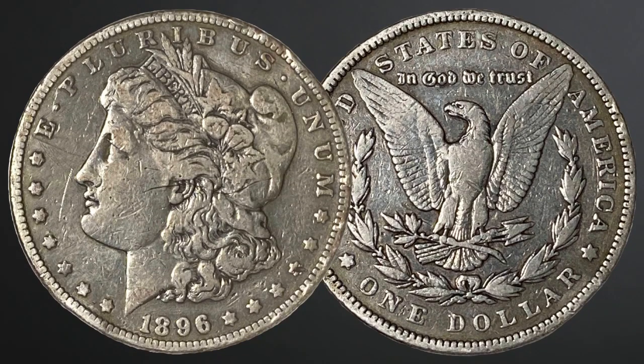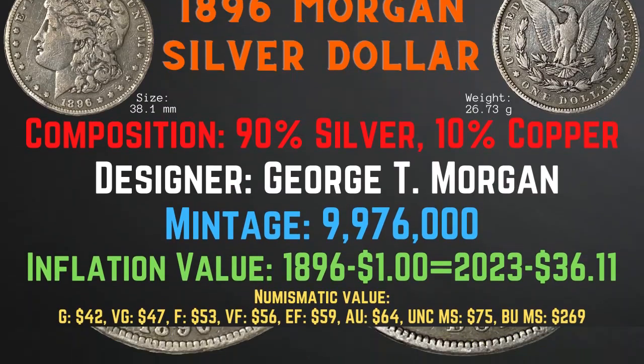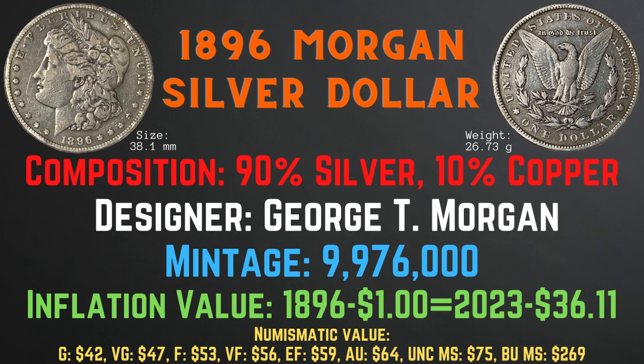Now let's take a look at the 1896 Morgan silver dollar. It has a size of 38.1 millimeters and a weight of 26.73 grams. Its composition is 90% silver and 10% copper. Its designer is George T. Morgan. Its mintage is 9,976,000. Its inflationary value for the year 1896 is $36.11. The numismatic values range from $42 in good condition up to $269 in brilliant uncirculated mint state condition.